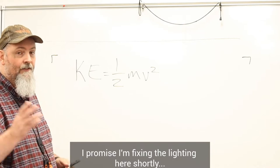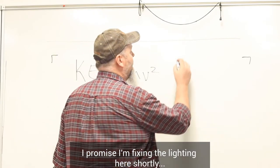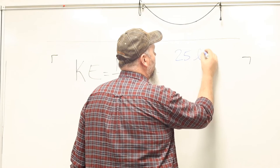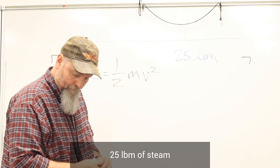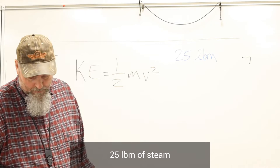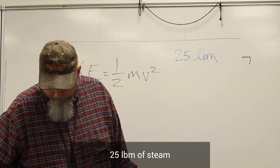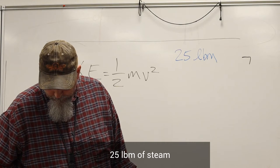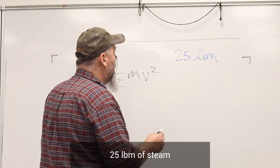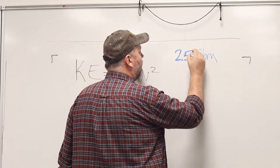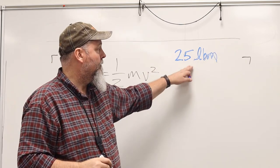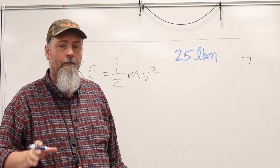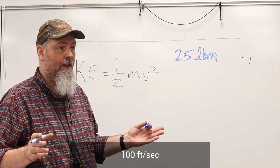I'm going to do, let's say we have 25 pounds mass of steam. 25 pounds mass of steam. And let's say we know its velocity. It's traveling down a pipe, we'll say 100 feet per second.